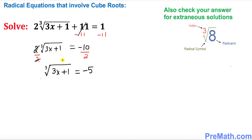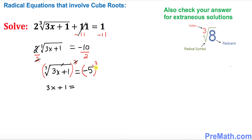Now we want to undo this cube root, so we're going to raise both sides to the power of 3. The cube and cube root undo each other, and we end up with 3x + 1 equals (negative 5)³.